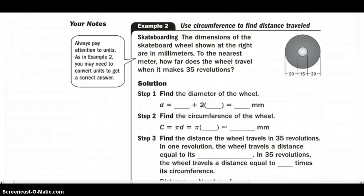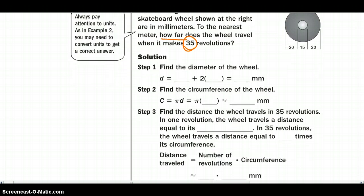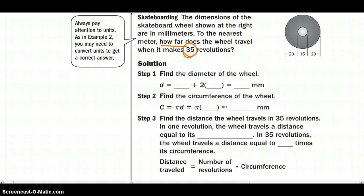Moving on to a word problem. So we have a skateboard wheel shown at the right in millimeters. To the nearest meter, how far does the wheel travel when making 35 revolutions? So our step 1, we need to of course find the diameter. So we can just add all of these up because the diameter goes through the center and is from one point of the circle to the other.